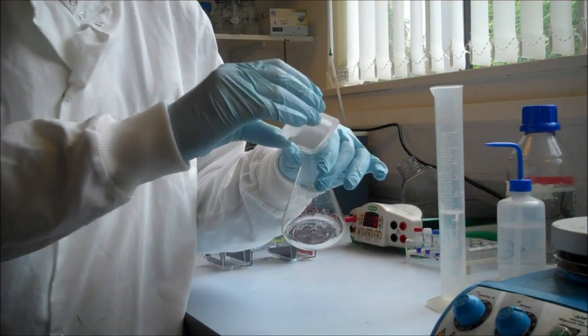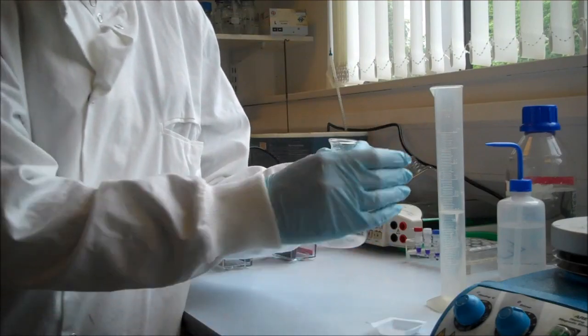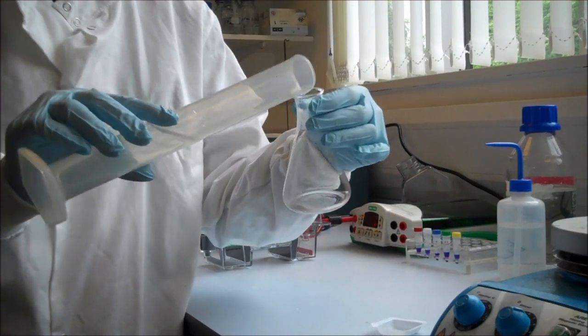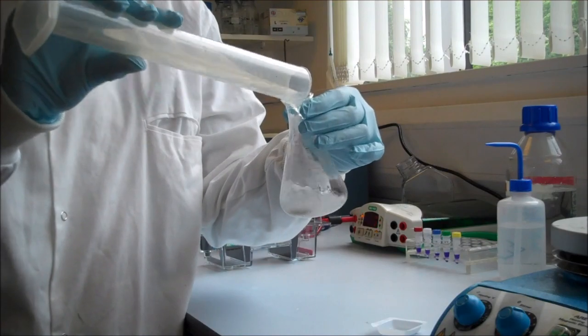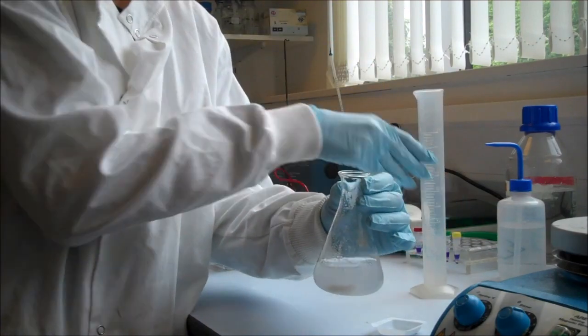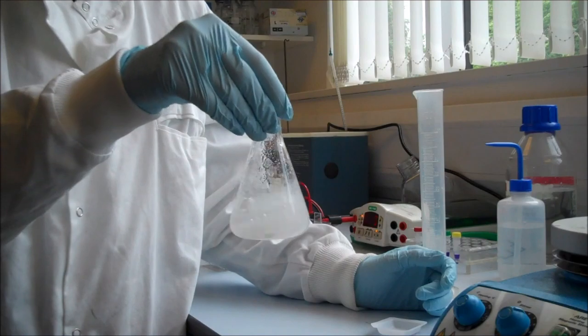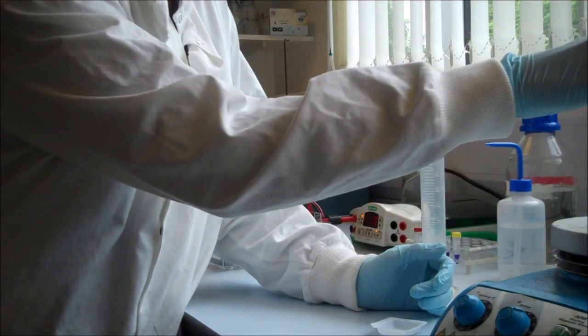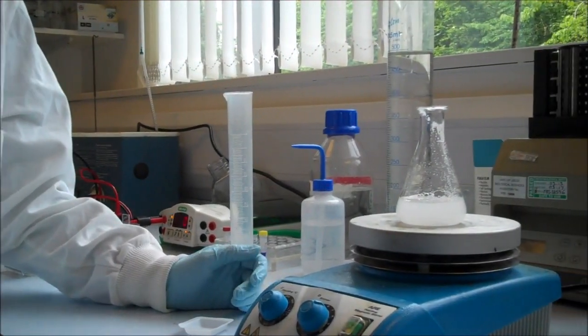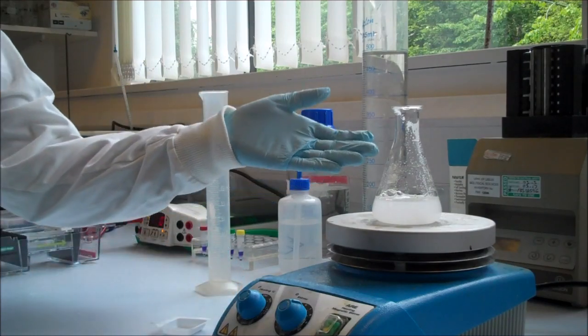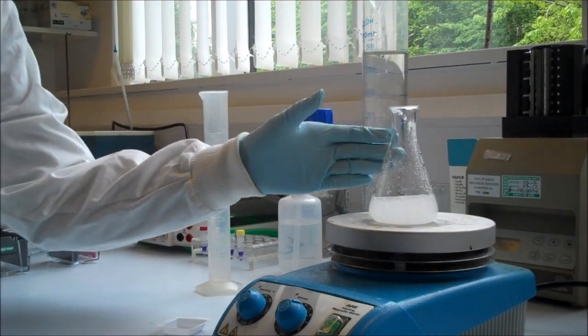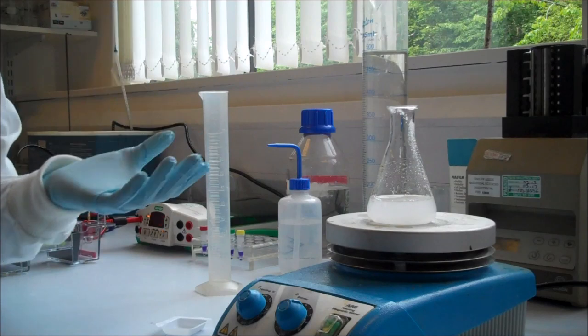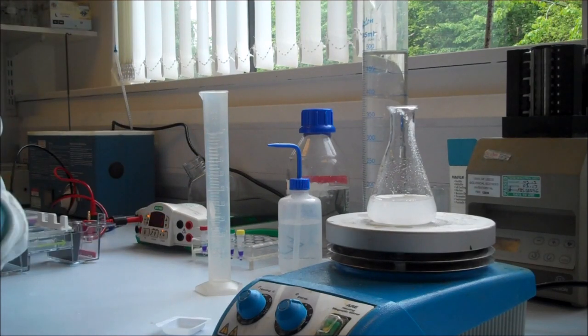We just put them together into something like a flask, could be any other vessel. Give it a little swirl and just put it on a hot plate to dissolve. And now we wait for the cloudy solution to become clear and once it's clear we can pour the gel and then it will solidify.